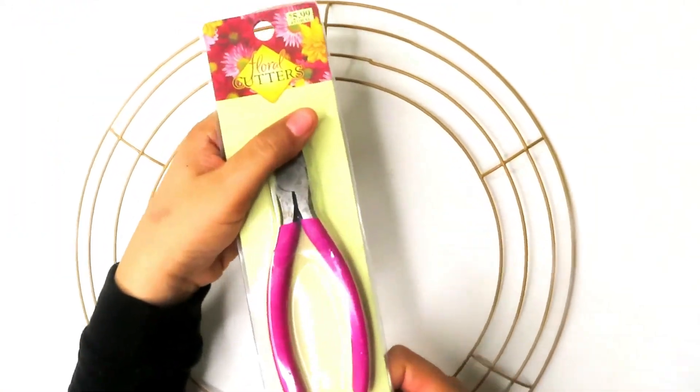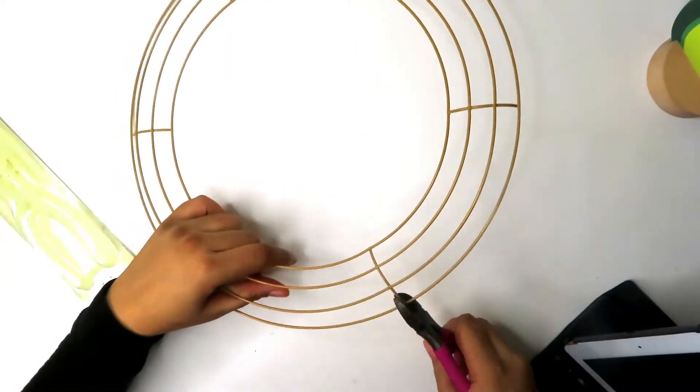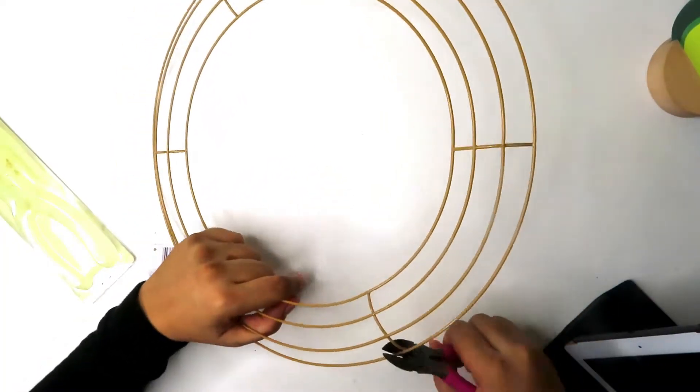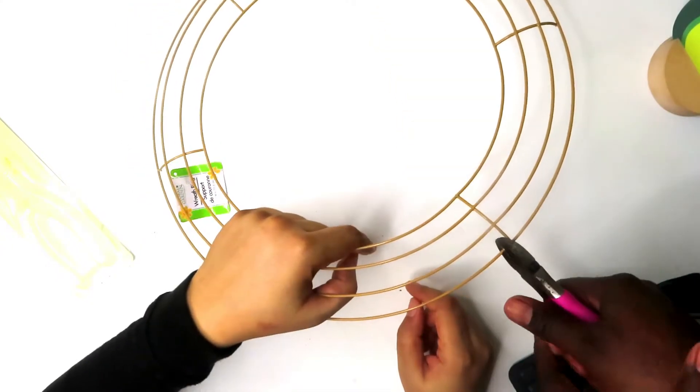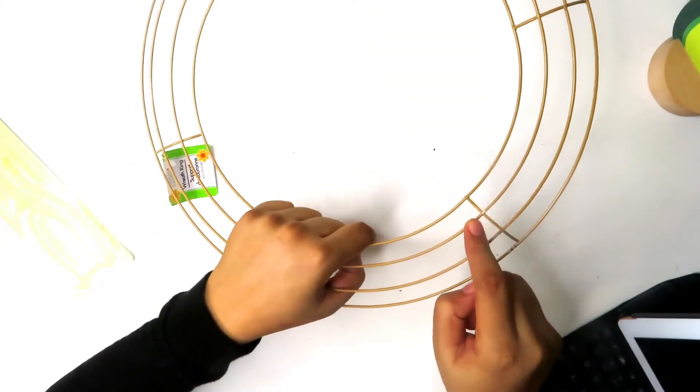Grab your floral cutters or pliers and use them to cut open your 14 inch wreath form. In full disclosure I struggled with this part a little bit so I had to call in my husband for backup.